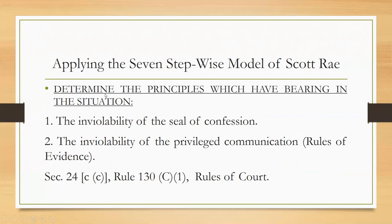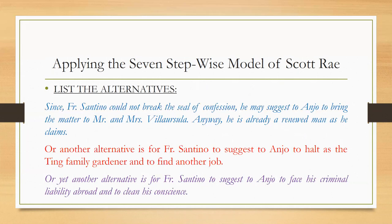Step three is to determine the principles which have bearing in the situation. Number one is the inviolability of the seal of confession — it must not be violated, as there is a consequence according to the Code of Canon Law. Another principle is the inviolability of privileged communication, found in the Rules of Evidence, Section 24(c), Rule 130(c)(1) of the Rules of Court, under which a priest cannot testify against a penitent without the penitent's approval or permission.